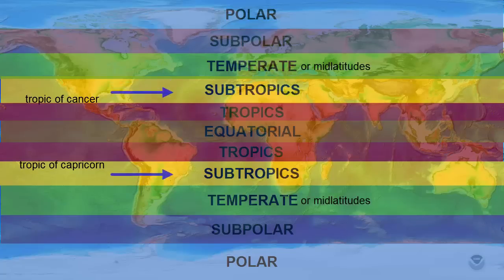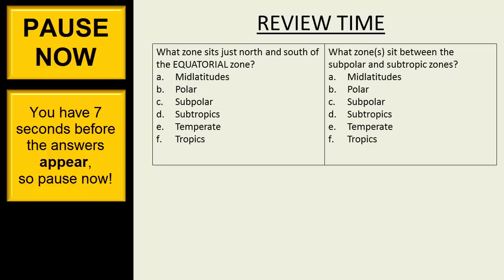So once again, starting from the equator, we move from the equatorial zone to the tropical zone to the subtropical zone to the temperate zone to the subpolar zone to the polar zone. Pause now.